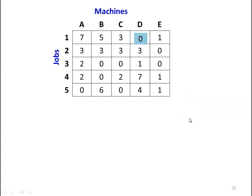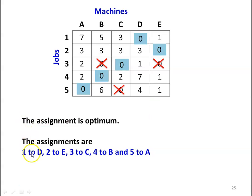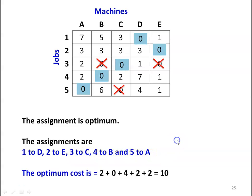Now we make the assignment. For job 1, assign machine B. For job 2, assign machine E. For job 3, assign machine C. For job 4, assign machine B. For job 5, assign machine A. All jobs are assigned and all machines are engaged; delete the remaining zeros. The assignment is optimum: 1 to D, 2 to E, 3 to C, 4 to B, 5 to A. The optimum cost is 2 + 0 + 4 + 2 + 2 = 10.